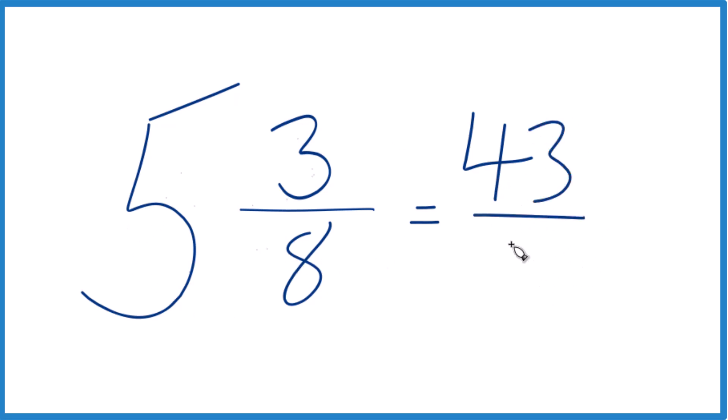We take the 8 now, the denominator there, and bring it across, and that's our improper fraction. 43 eighths is the improper fraction for 5 and 3 eighths, our mixed number here. Let's do it again.